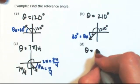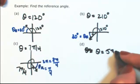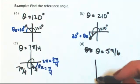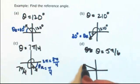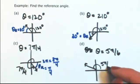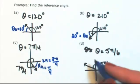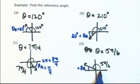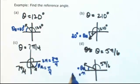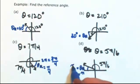Let's do radians again. Let's say theta is 5π over 6. Half a revolution is π, so this is a little bit less than that — it's in the second quadrant. To get back to the x-axis and stay less than π over 2, we need to go forward. Half a revolution is π, and with a common denominator of 6 that's 6π over 6. So if theta is 5π over 6, I have 1π over 6 left. So theta r is π over 6.